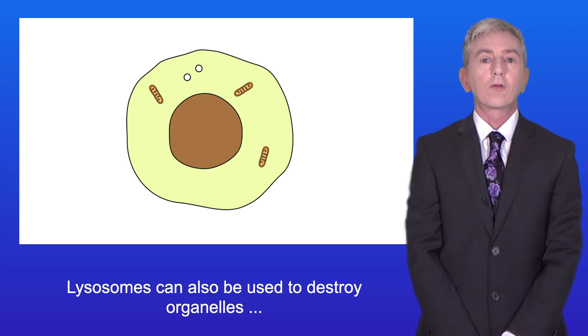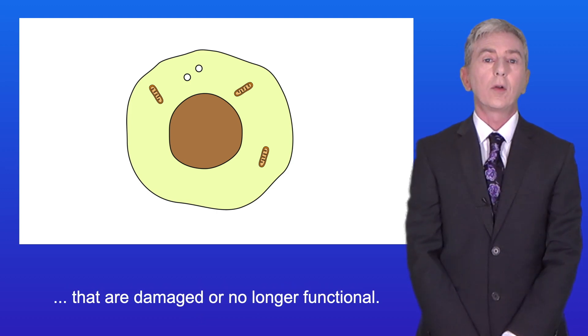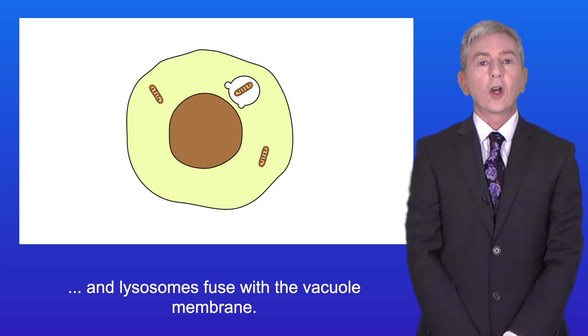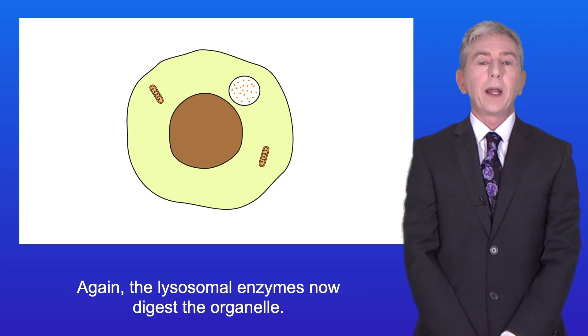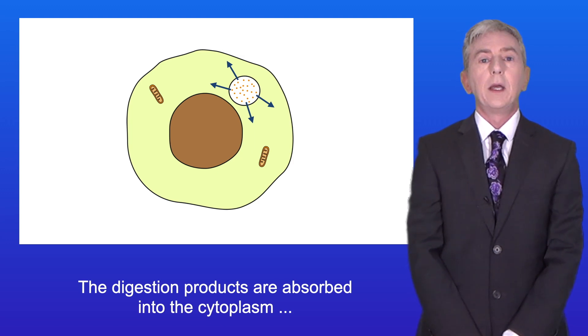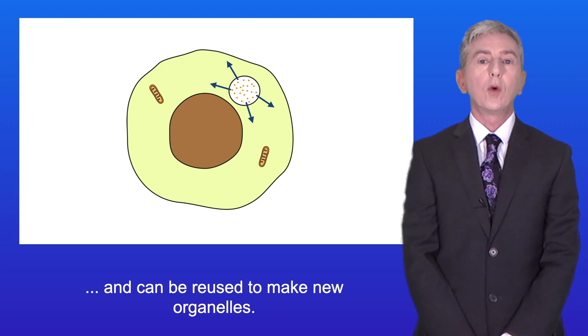Lysosomes can also be used to destroy organelles that are damaged or no longer functional. In this case, the organelle is surrounded by a vacuole and lysosomes fuse with the vacuole membrane. Again, the lysosomal enzymes now digest the organelle. The digestion products are absorbed into the cytoplasm and can be reused to make new organelles.